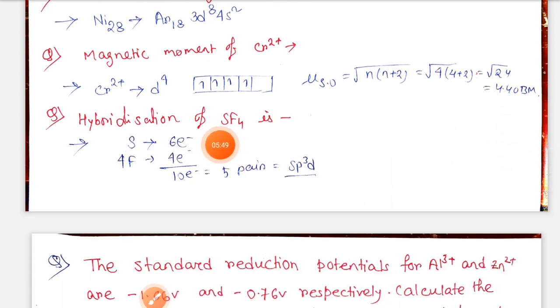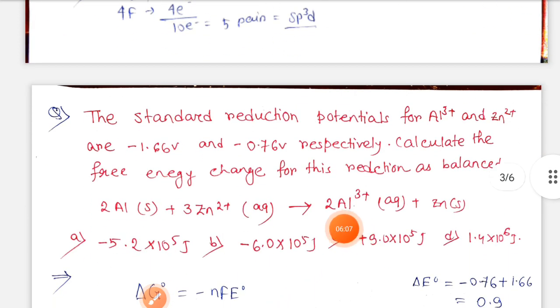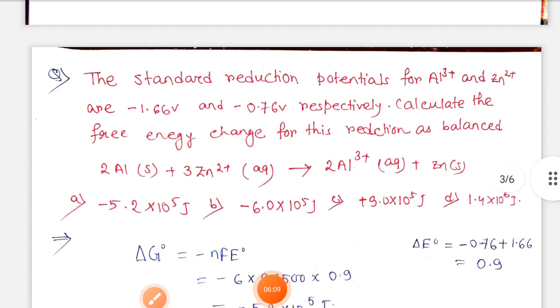Hybridization of SF4: sulfur valence electrons are six, plus four fluorine electrons, total ten electrons, five pairs. Bond pairs are four, one lone pair, so sp3d hybridization. Next, this is a question from electrochemistry.